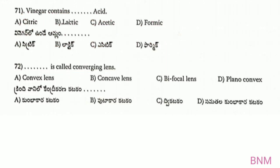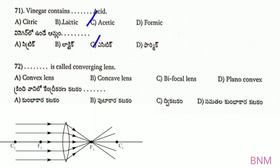Next, vinegar contains acetic acid. Next, a converging lens — in the case of a converging lens, we have a converging lens.